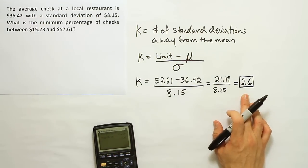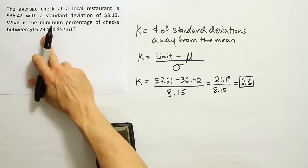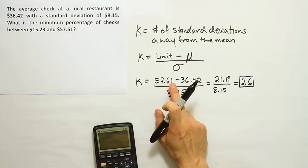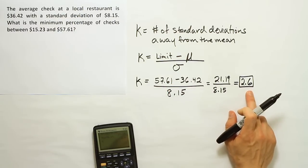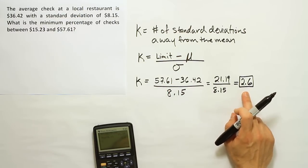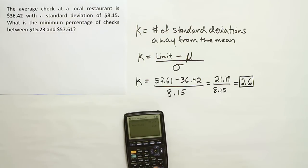So long as I can show that this other limit, the 15.23, when plugged into this formula, gives me almost the same number. The only difference should be the sign. The sign should be opposite. So I'm going to quickly check that in my calculator.